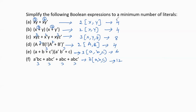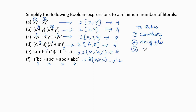These are the number of literals and input variables. The aim to simplify Boolean expressions to a minimum number of literals is to reduce circuit complexity, reduce the number of logic gates used to design the circuit, reduce cost, and reduce power consumption. These are the main reasons to simplify any Boolean expression to the minimum number of literals.